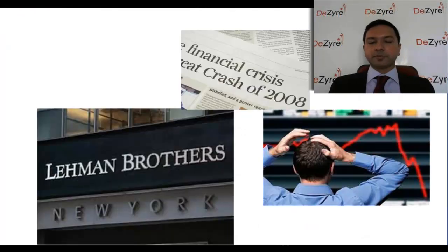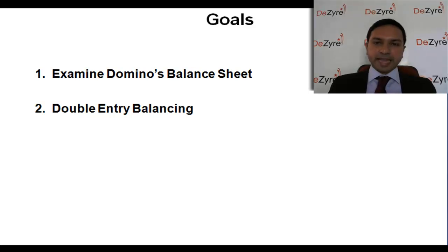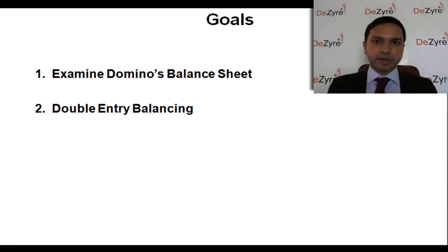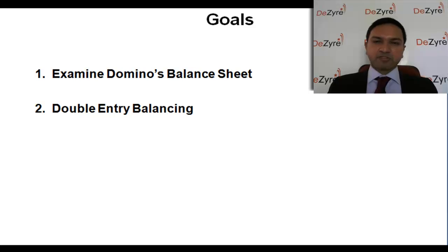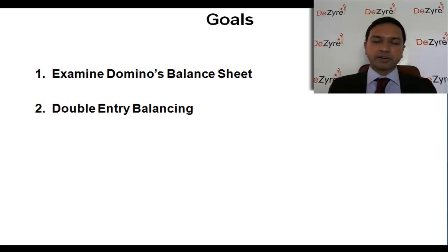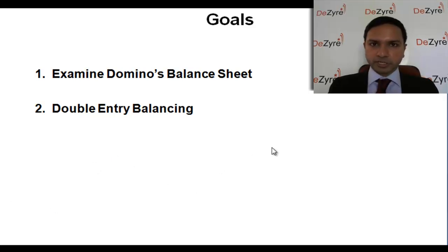The focus of this session is to get into the details of a balance sheet. The best way to understand a financial statement is to look at a real one, which we'll do by examining Domino's balance sheet. We'll also cover a fundamental concept called double entry balancing, and by the end of this session, you'll better understand the whole financial crisis.